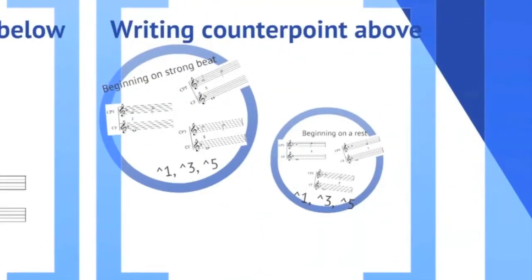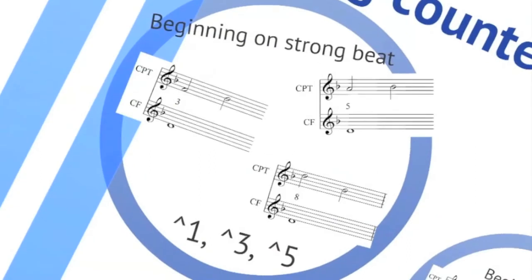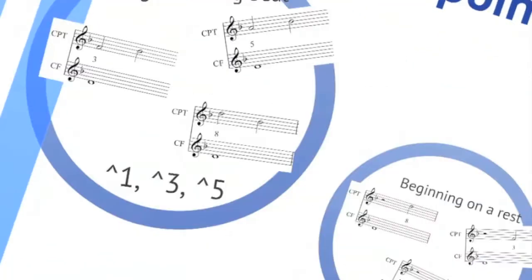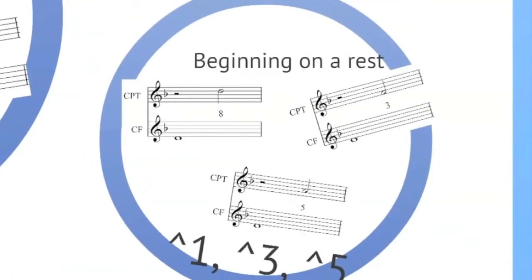If you're writing your counterpoint above you actually have six different options. You can begin on a strong beat on scale degrees 1, 3, or 5, or you can begin on a rest and then on the weak beat you would start again on 1, 3, or 5.